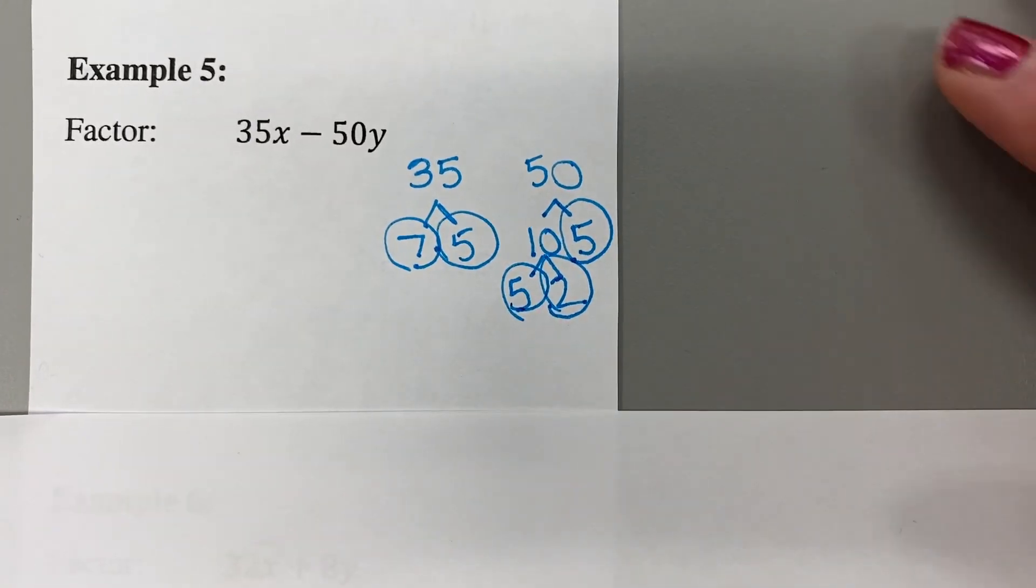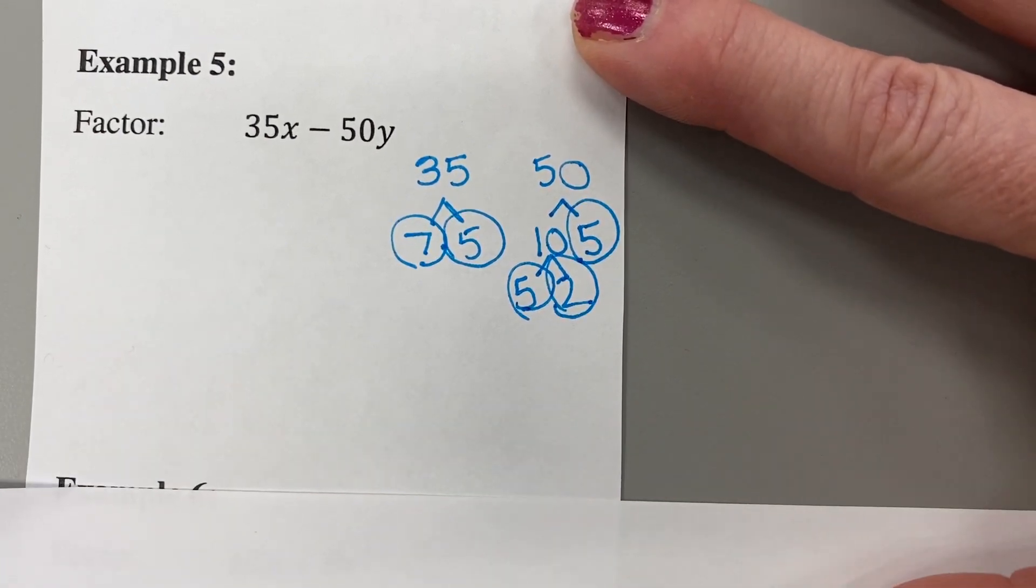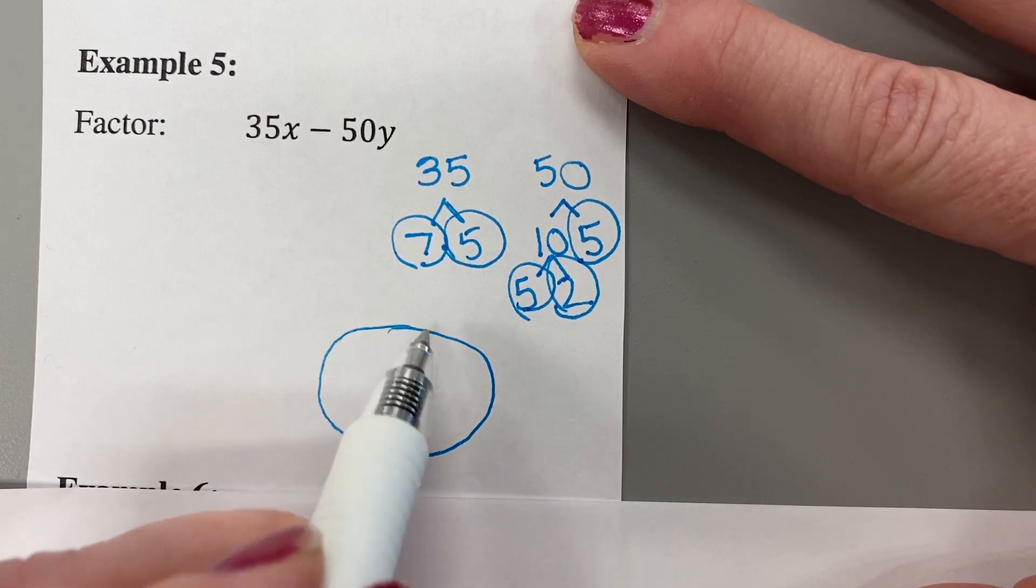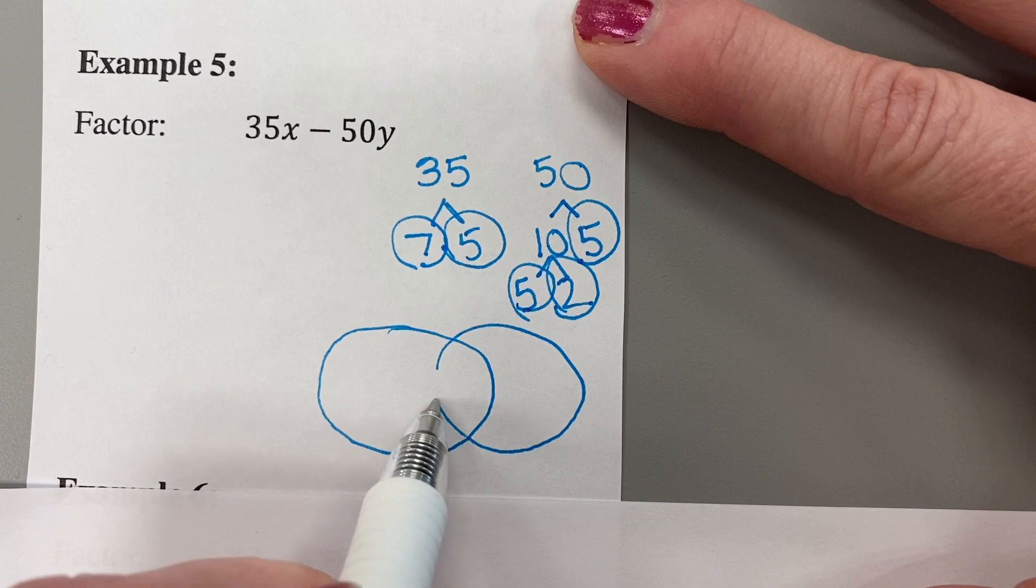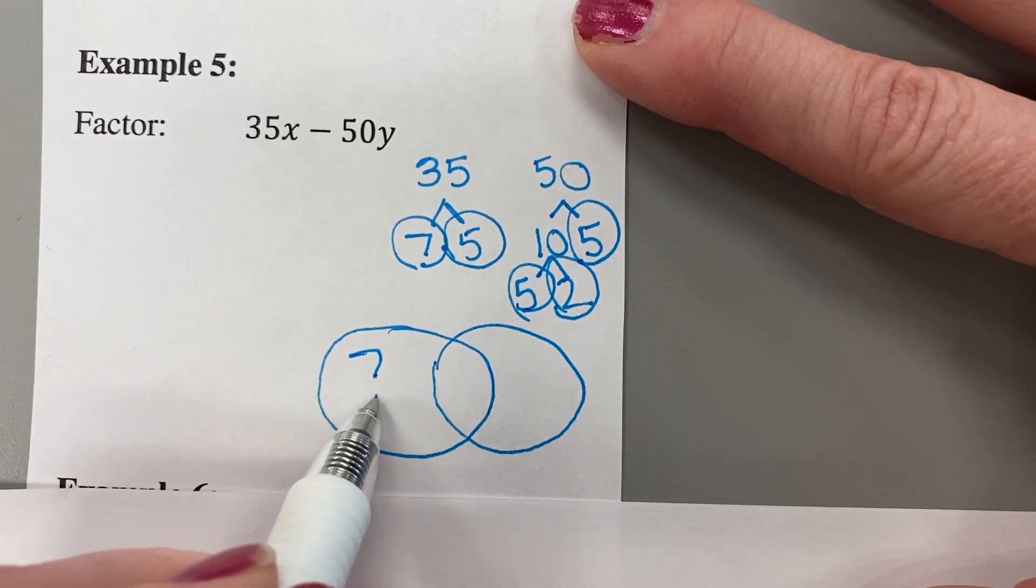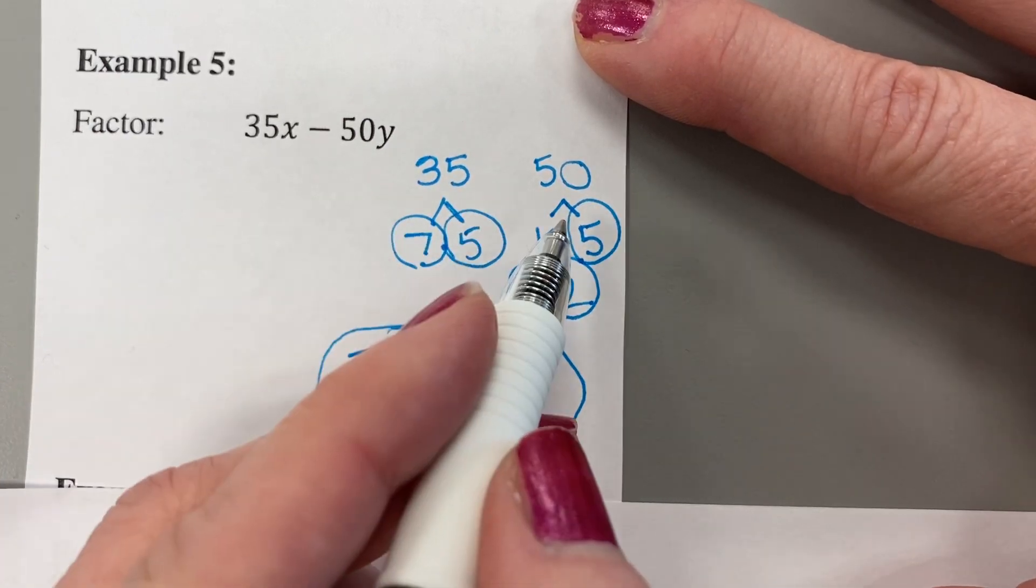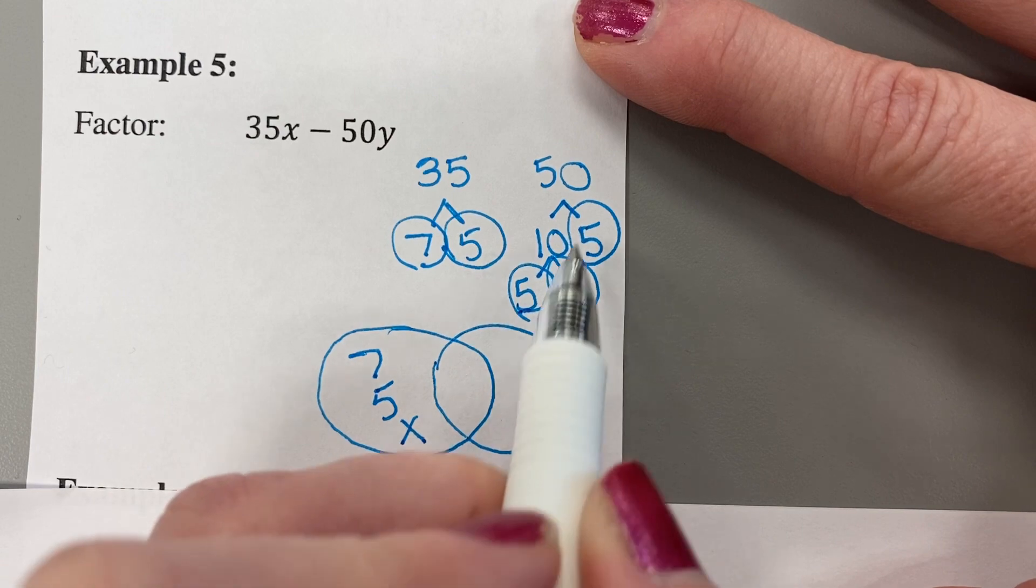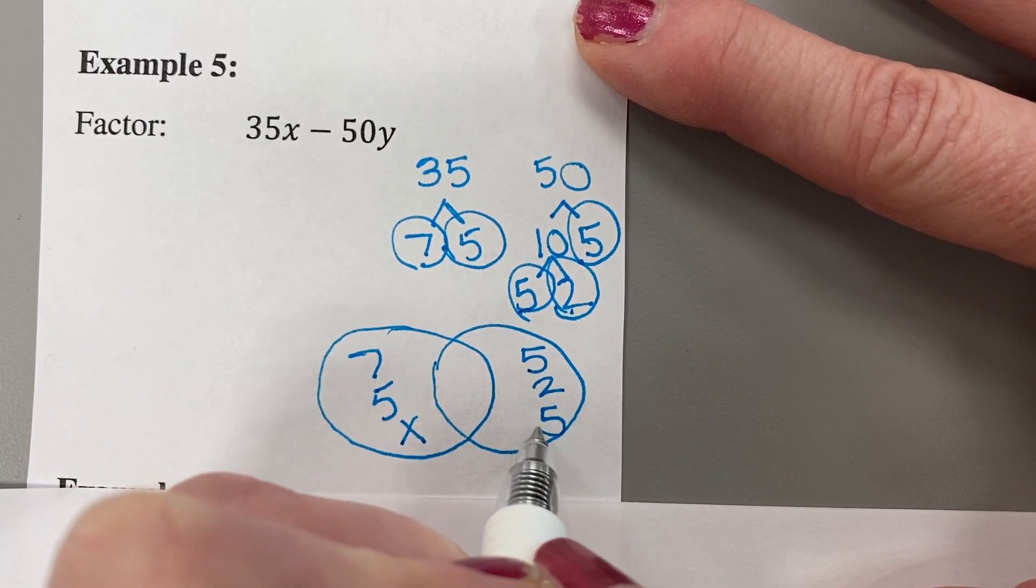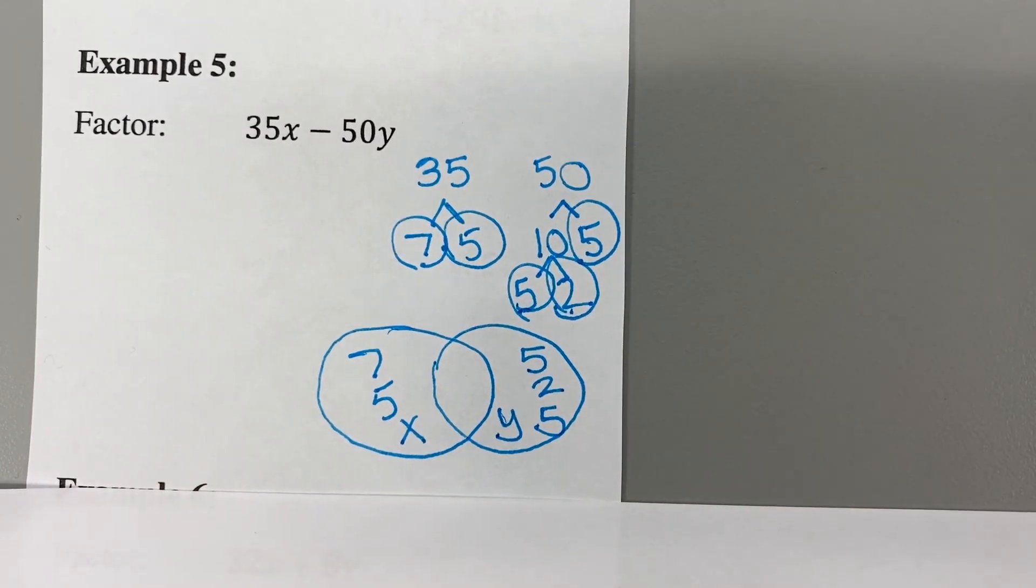So when I make my circles for my Venn diagram, let's see if I left myself space here. Okay. We have our first circle. And then our overlapping circle. Okay. So on this side, we have a 7 and a 5. And let's not forget that x. And then on this side, we have a 5, 2, 5. 5, 2, 5, and a y. So let's fit a y in there.